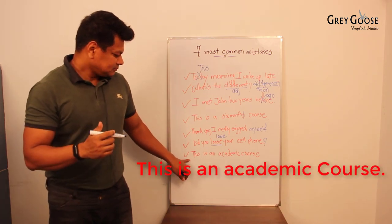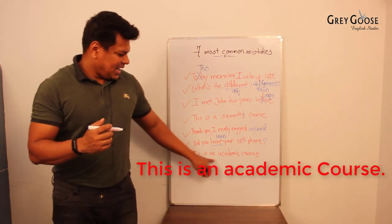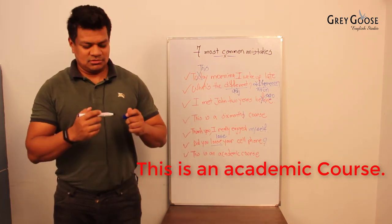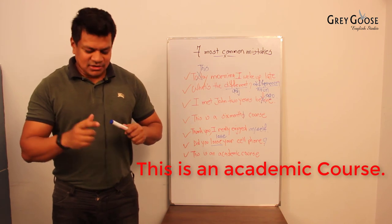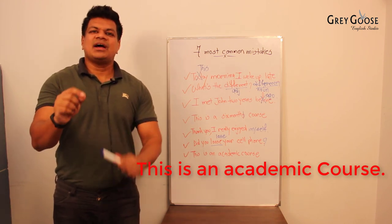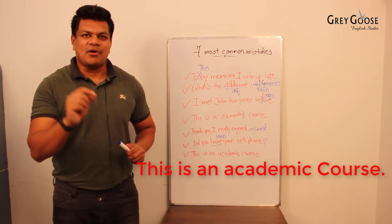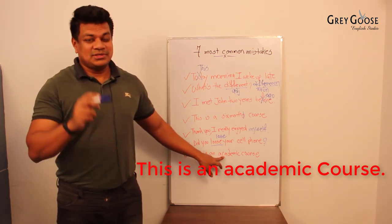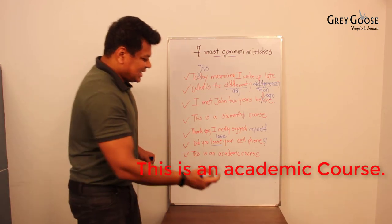Last one: 'This is an academic course.' Now what's the problem again here, if you can find out? Again, grammatically you don't find any problem, but the main problem is in pronunciation. That's the reason I've picked this up here. Look, this is an academic—